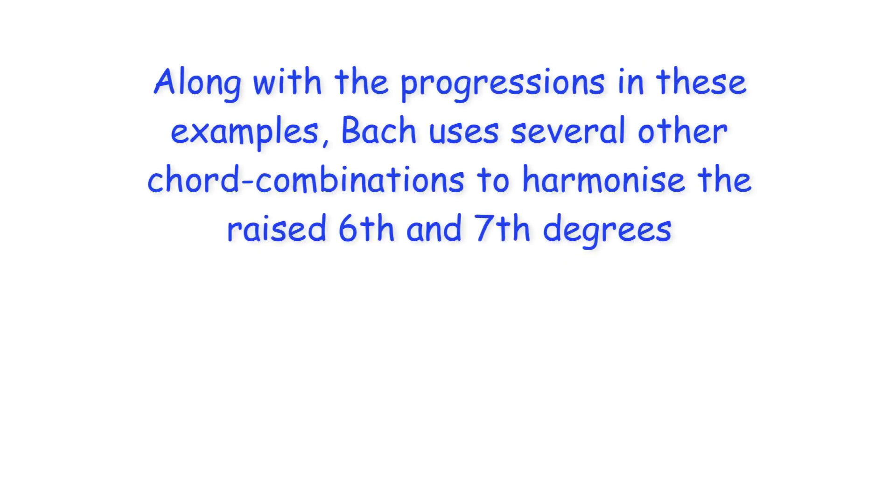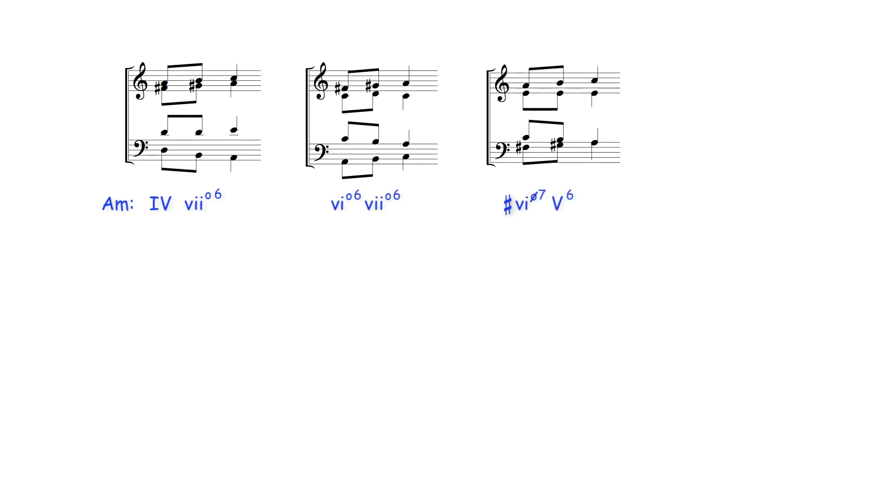Along with the progressions in these examples, Bach uses several other chord combinations to harmonize the raised sixth and seventh degrees including 4-7, 6-7, 6-5, 4-5 and various combinations of these chords in inversion and with added sevenths. Notice with all of these examples sometimes the raised notes are the root notes of the chords while at other times they're the third or fifth.